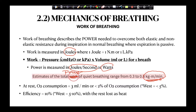At rest, oxygen consumption for the work of breathing equals 3 mL per minute, or less than 2% of total oxygen consumption — West quotes this as less than 5%. The efficiency is quoted at 10%, with West placing it at 5–10%, and the rest is lost as heat.